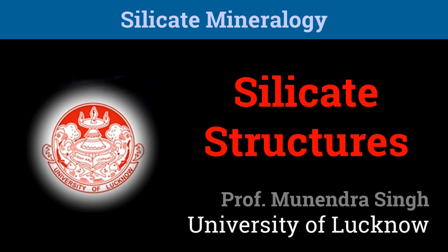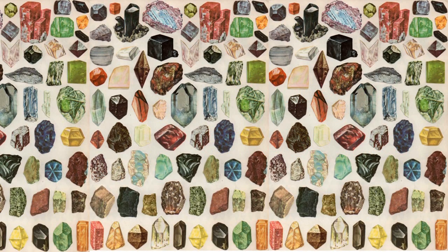Let us start learning about silicate mineralogy. From the physical property presentations, you might have realized that the nearly 4500 existing mineral species have various properties, appearances and other trivialities. In order to effectively study them, it is crucial to organize them in a meaningful classification.